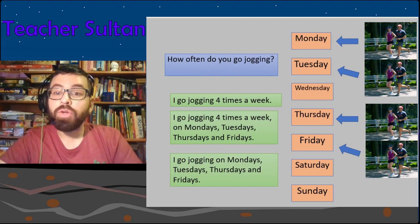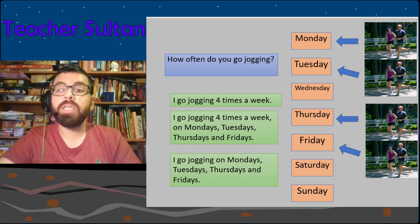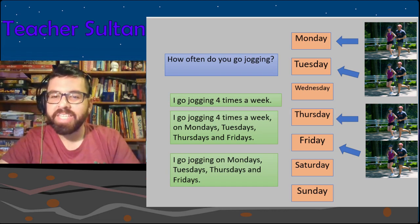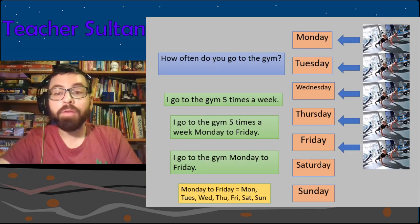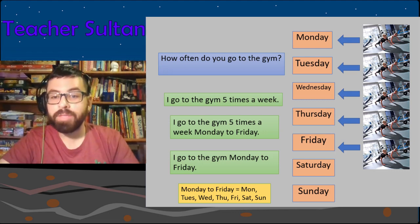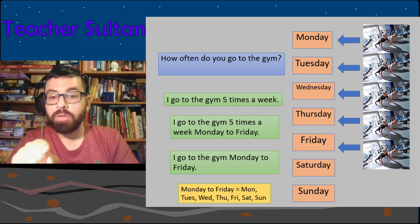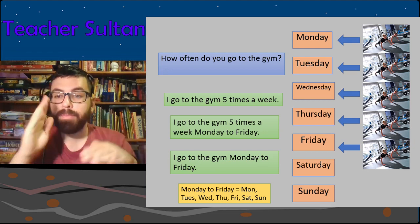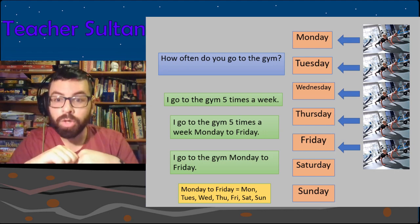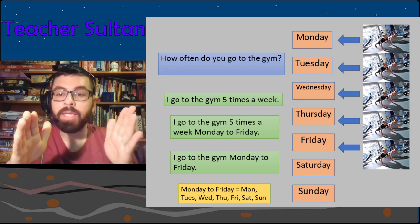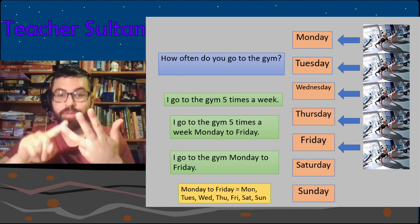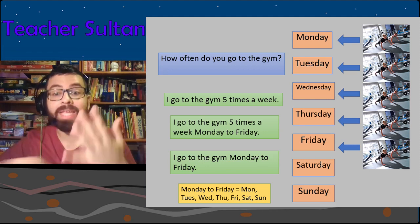How often do you go jogging? 'I go jogging four times a week.' How often do you go to the gym? 'I go to the gym five times a week.' You can also say 'Monday to Friday,' which means Monday, Tuesday, Wednesday, Thursday, Friday. A lot of people work Monday to Friday too.